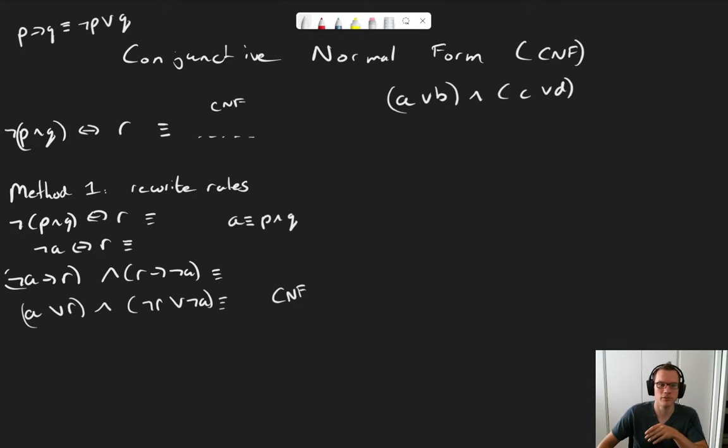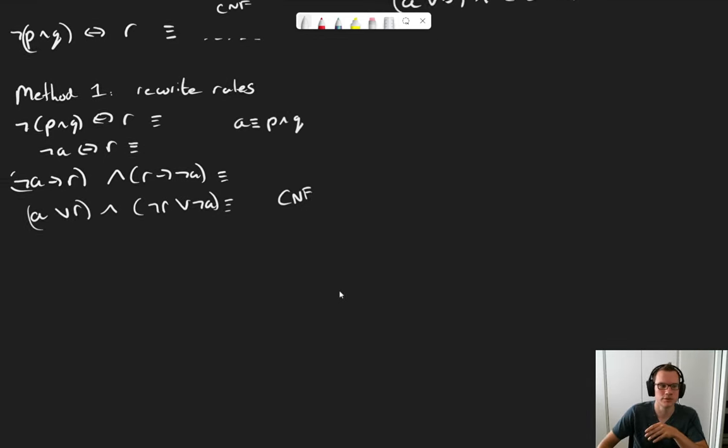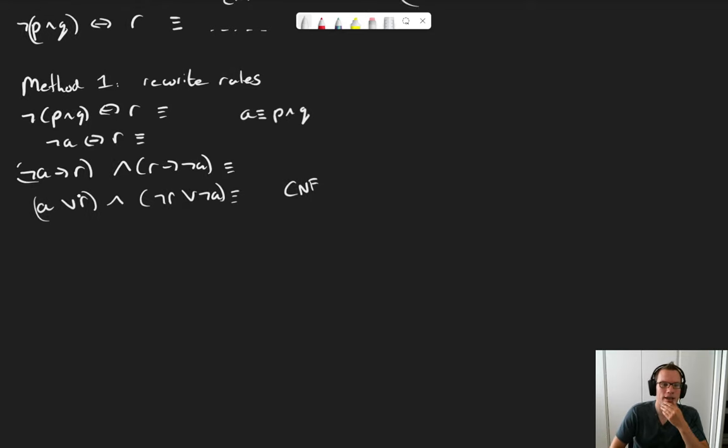So what do we get? Well we get (p and q or r) and (not r or not (p and q)). Well this is no longer in CNF. There is a negation here in front of a conjunction. We don't allow that. And there is a conjunction inside a disjunction here. And CNF doesn't allow that either. So let's see if we can get rid of both of these problems.